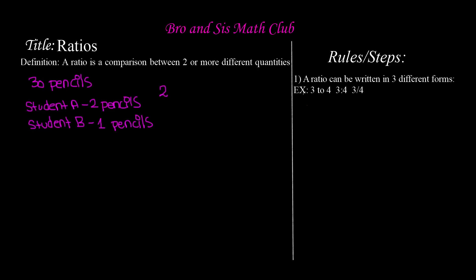We can write this ratio in three different forms. The first form is using the word "to": two to one. The second form is using a colon: two colon one. And the last form is in fraction form: two divided by one, or two over one.